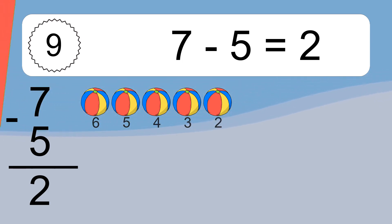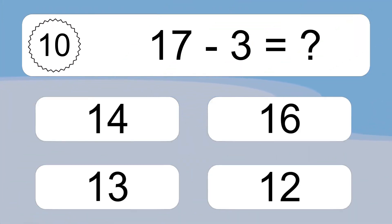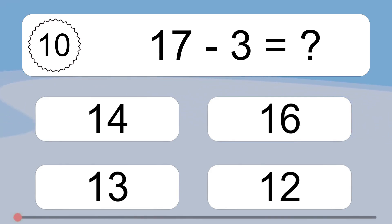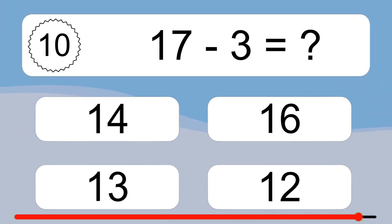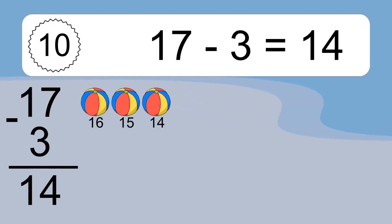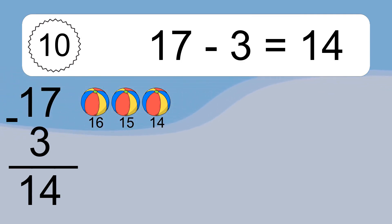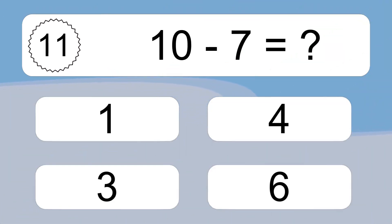17 minus 3 equals what? 17 minus 3 equals 14. Let's count it: 16, 15, 14.